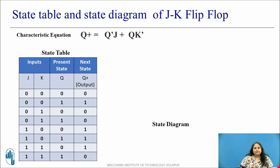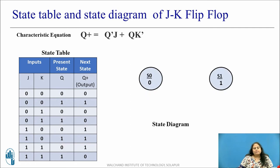Let us now try to draw the state diagram for the state table using the Moore machine model. The possible values of states are either 0 or 1. Therefore, there are a total of 2 states for this flip-flop, given by 2 circles S0 and S1. As the output is the next state value itself, when the flip-flop is in state S0 the output is 0, and when it is in state S1 the output is 1.